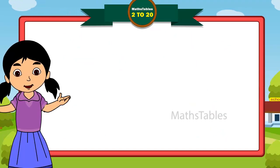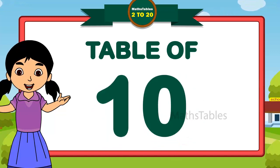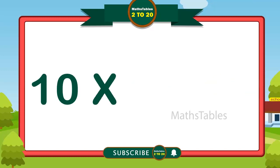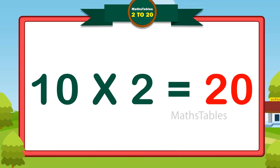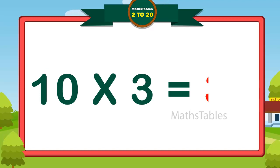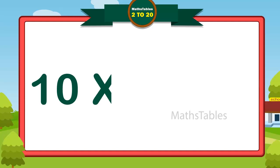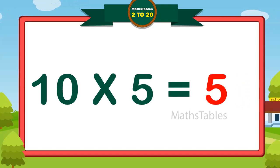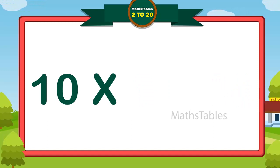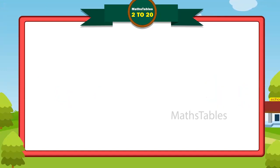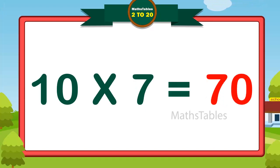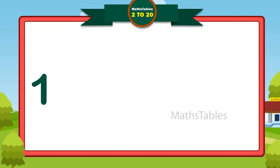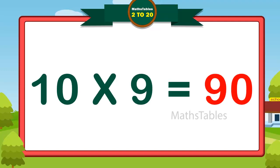Hi friends, now we will learn table of 10. 10 ones are 10. 10 twos are 20. 10 threes are 30. 10 fours are 40. 10 fives are 50. 10 sixes are 60. 10 sevens are 70. 10 eights are 80. 10 nines are 90.